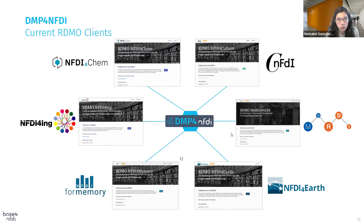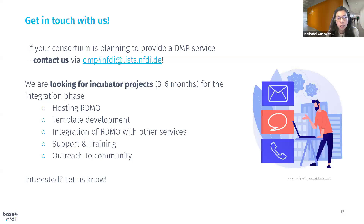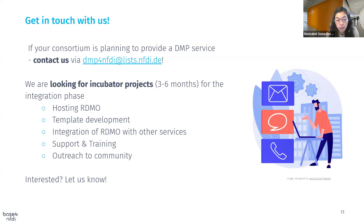In our initialization phase, we have been working with several consortia. Some already have productive or test instances, and starting today, NFDI for Agro also has an RDMO instance. We are also collecting requirements with NFDI for Biodiversity. If your consortium is planning to provide a DMP service, please contact us. We are looking for incubator projects for our integration phase — examples include hosting RDMO, template development, integration of RDMO with other consortium services, training and support, and outreach to the community to create awareness regarding DMPs.